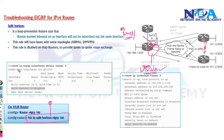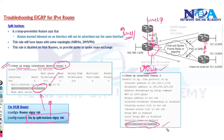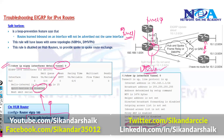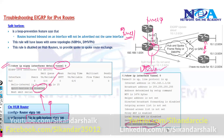You can verify whether split horizon is disabled or not with the command 'show ip eigrp interface detail' followed by the tunnel interface. As you can see, after configuring the 'no ip split-horizon' command, it shows as disabled. By default it will be enabled, so you have to disable it. This split horizon rule impacts hub and spoke scenarios, but for normal point-to-point or broadcast interfaces, there won't be any issue.